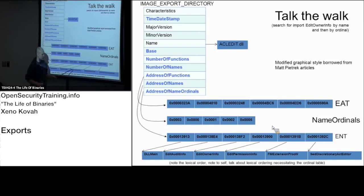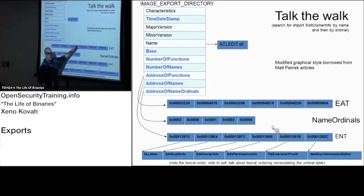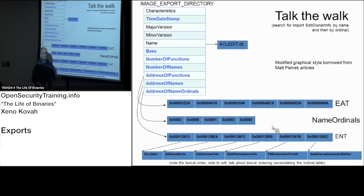I believe originally the names table was not alphabetically sorted, which is part of the reason the name ordinals translation table existed in the first place. When it was unsorted, you'd do a linear search, find the entry, and then go up through that translation. This was circa Windows 95 — they weren't sorting this. That's why I believe that extra layer of indirection is there, though I'm not 100% certain; that's just historical context I've seen.